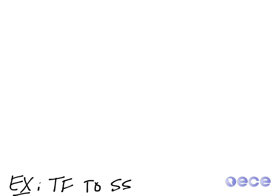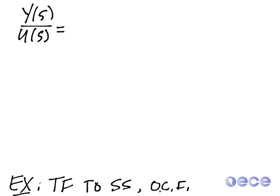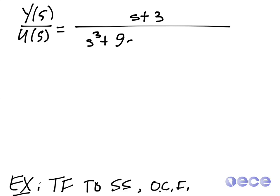I'm going to do another example of going from a transfer function to a state space model, but this example is going to use the observable canonical form. For observable canonical form, we use a slightly different way to take a Y(s) over U(s) transfer function and convert that to a state space model. So here Y(s) over U(s), I'm going to use (s + 3) over (s³ + 9s² + 24s + 20).